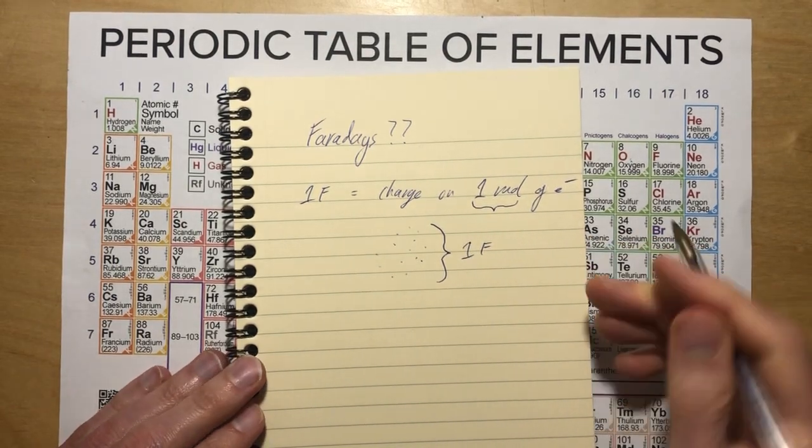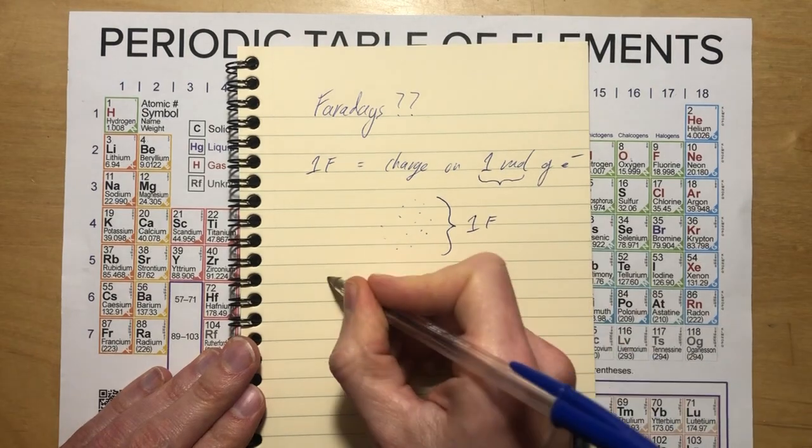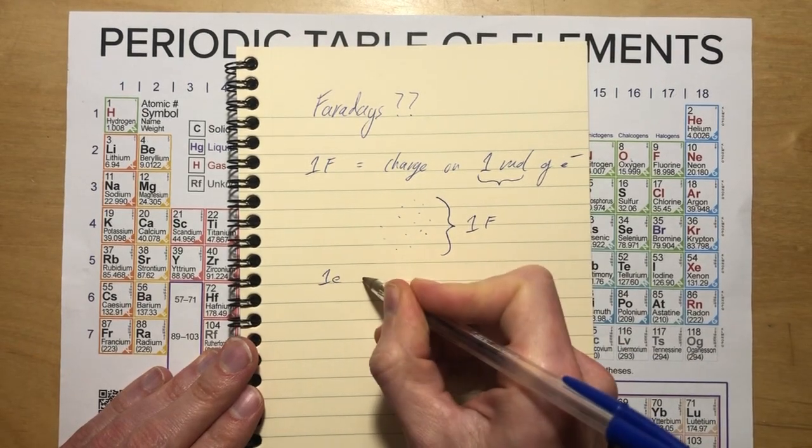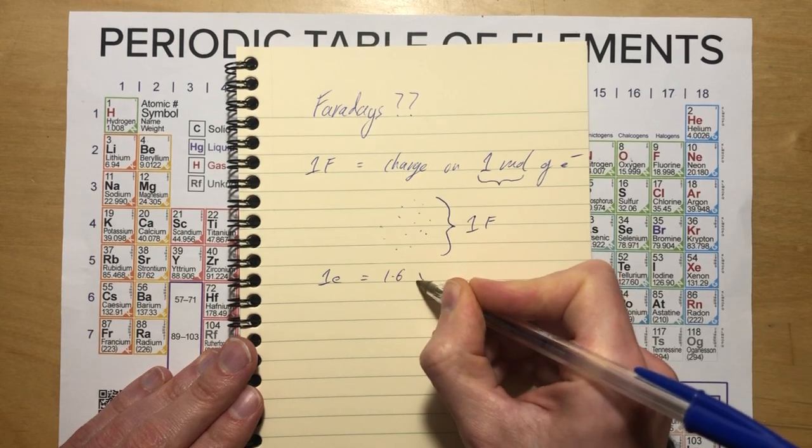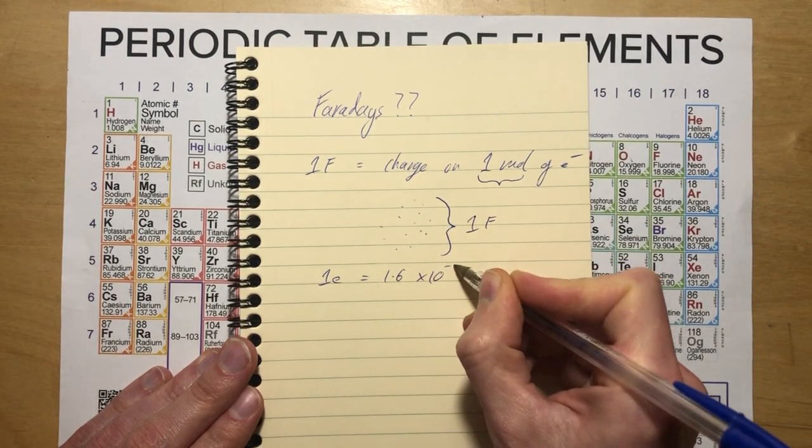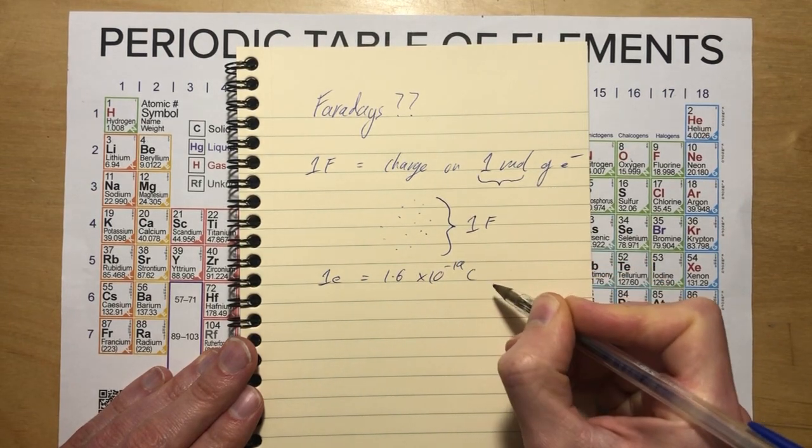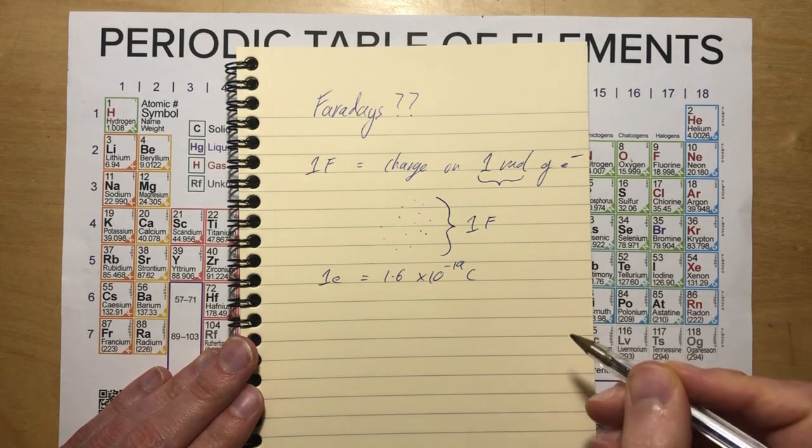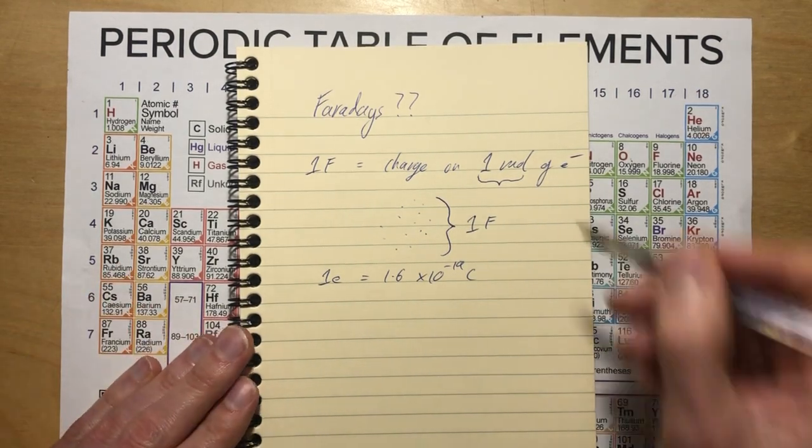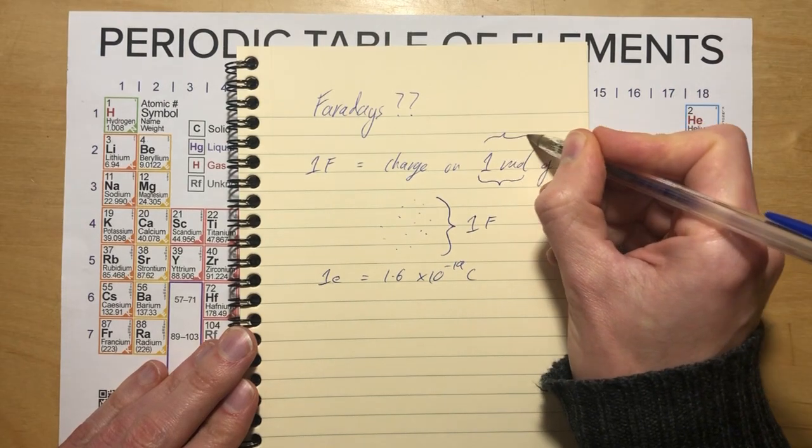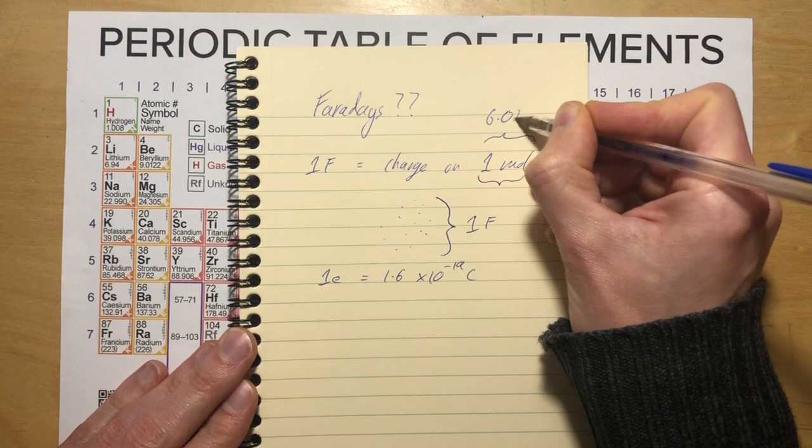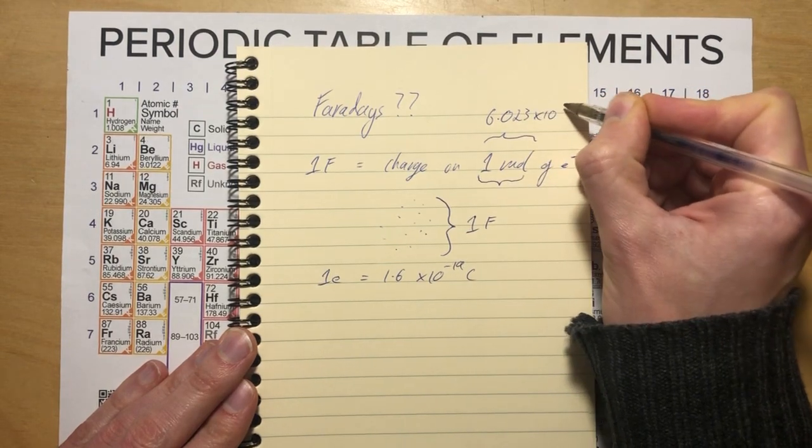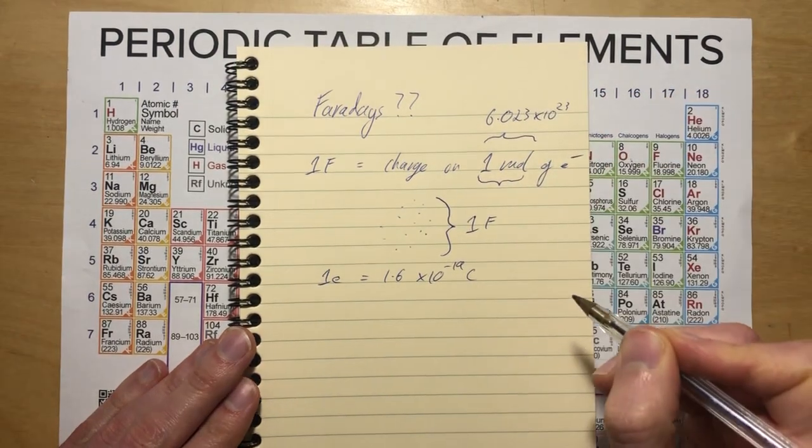And you could even figure out what one Faraday is in Coulombs. Remember that one elementary charge is simply 1.6 times 10 to the power minus 19 Coulombs. And so you could then just multiply that by how many things there are in one mole. Another enormous number: 6.023 times 10 to the power 23. That's Avogadro's number.